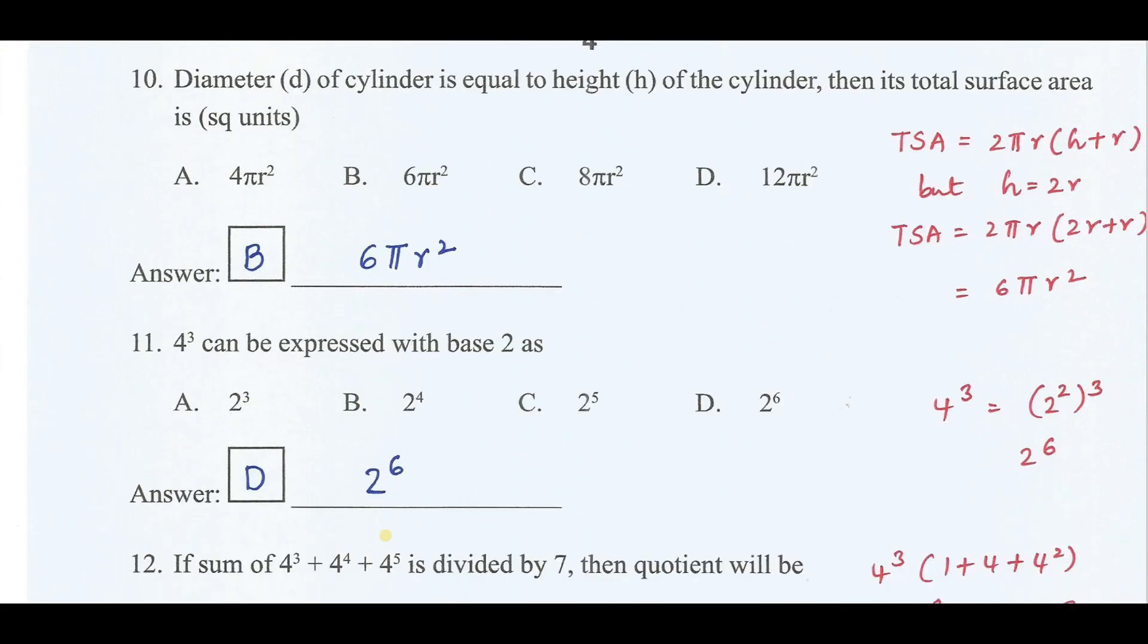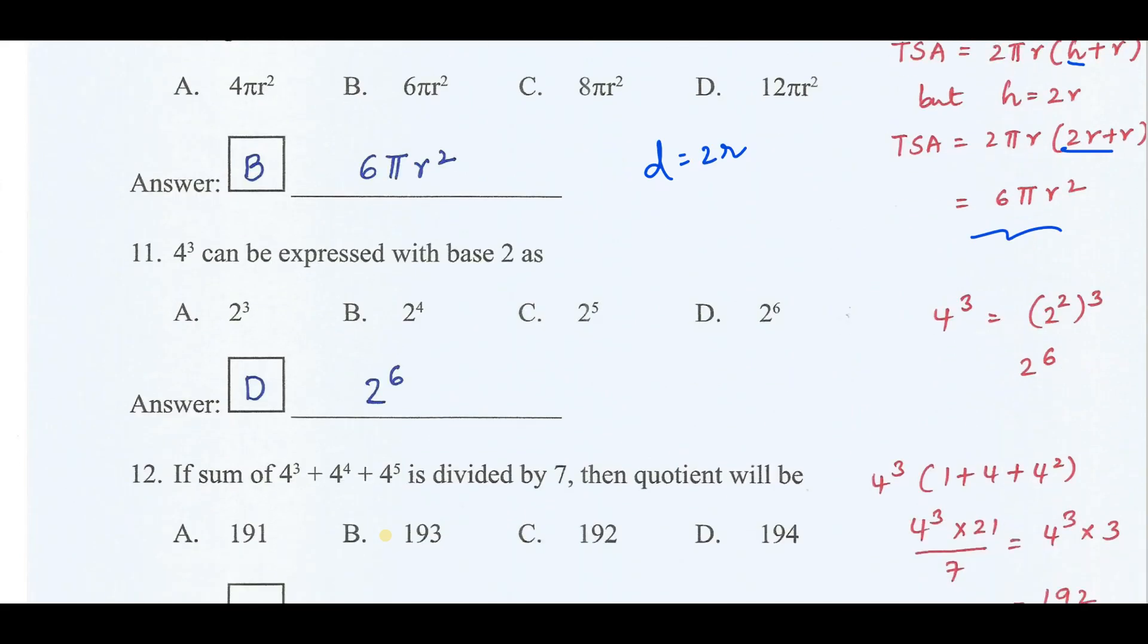Diameter of cylinder is equal to height of the cylinder. We know the total surface area is 2πr(r+h). Here h equals 2r because height equals diameter. Diameter equals 2 times the radius. Now replace h by 2r: 2πr into 2r plus r, that is 2r plus r equals 3r. 2πr as it is, r into r equals r square. Therefore it is 6πr square. The correct answer is option B. 4 cube can be expressed with base 2 as: 4 cube can be written as 2 square into 3, that is 2 power 6. Therefore the correct answer is option D.